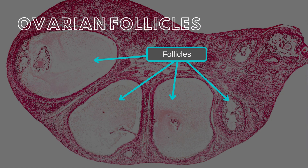Ovarian follicles progress through primordial, primary, secondary, and mature stages, each marked by distinct developments. Mature follicles, the largest, span the cortex, preparing for potential ovulation. Histological analysis reveals follicular atresia — degeneration occurring at various stages. A female is thought to have all of her oocytes at birth, with ovulation alternating between ovaries and typically only one follicle ovulating per cycle.